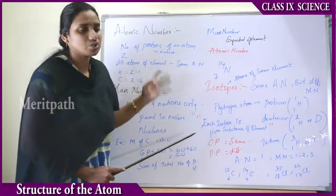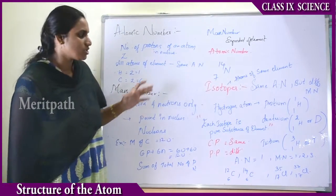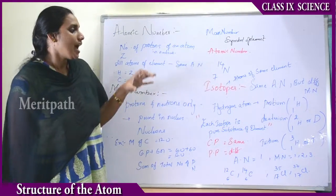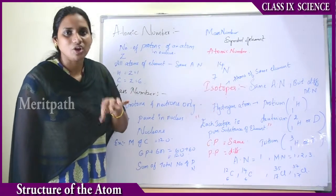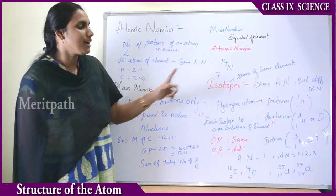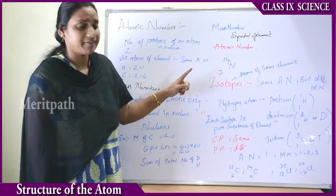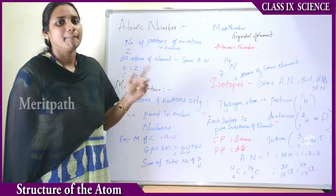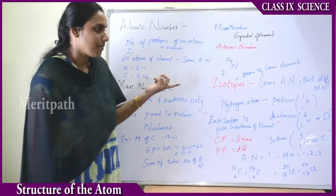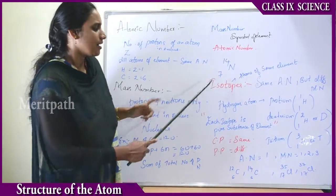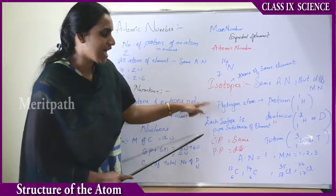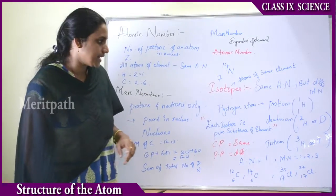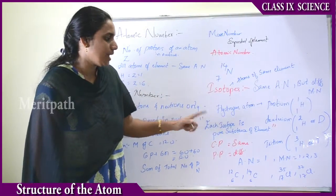Now let us see the isotopes of an element. Isotopes are defined as atoms of an element that have the same atomic number but differ in mass number. For example, the hydrogen atom has 3 isotopes: protium, deuterium, and tritium.